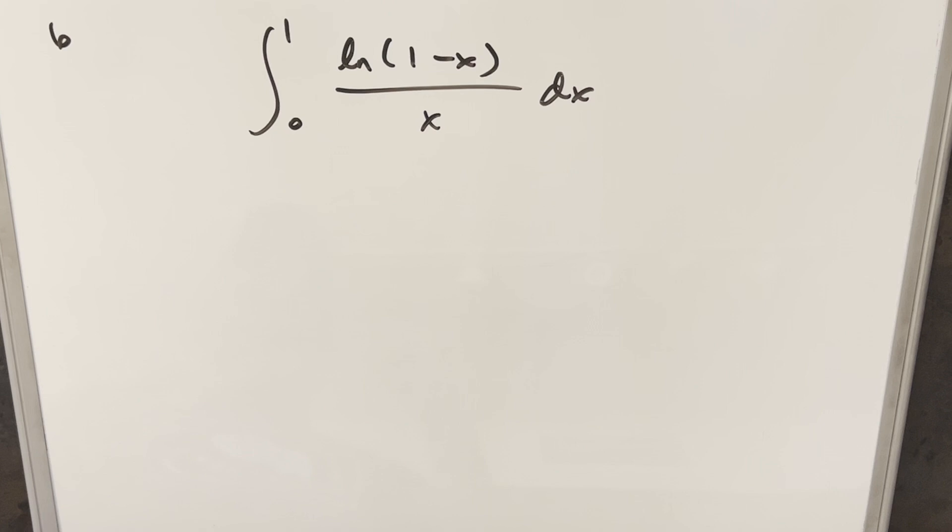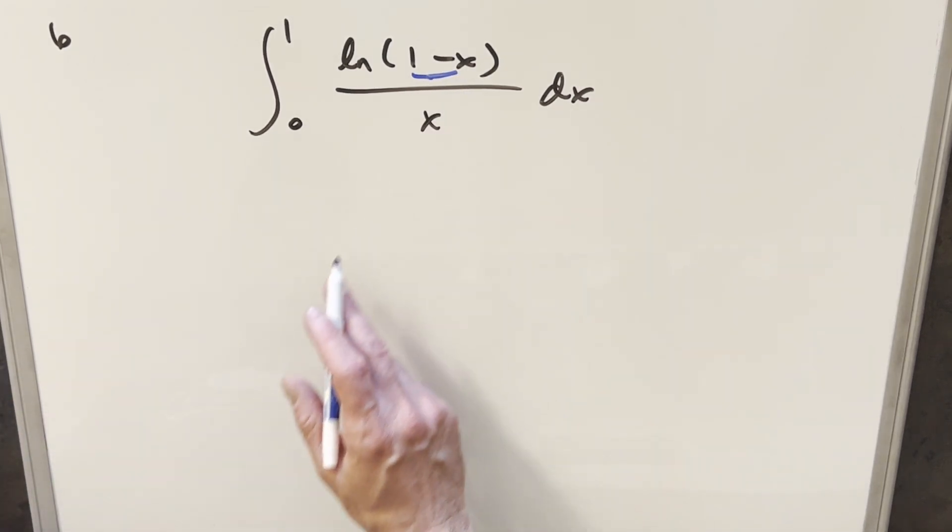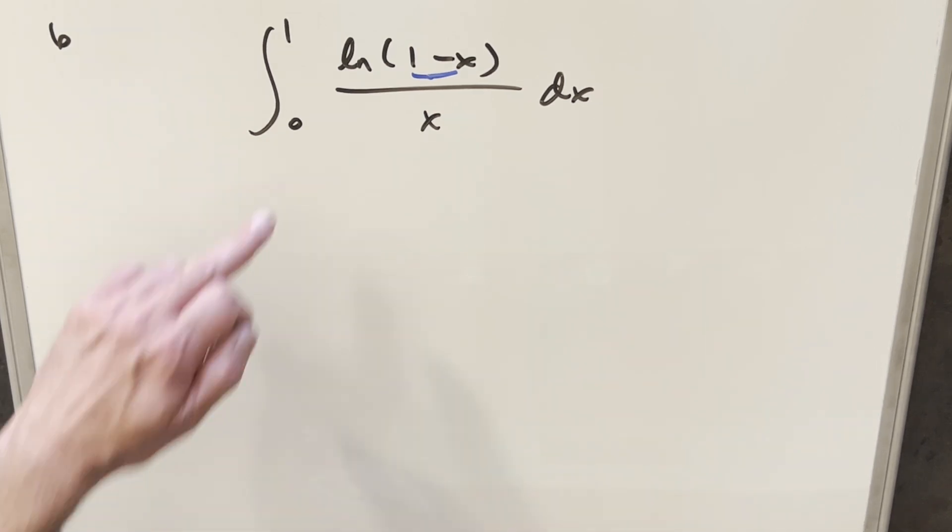When I first did this, I was really wishing if this was just x, we're all set up for our u substitution. I don't think it converges with the bounds, but it's some nice wishful thinking. But anyway, we need some way to deal with the fact this is kind of hard to deal with the way we have it here.